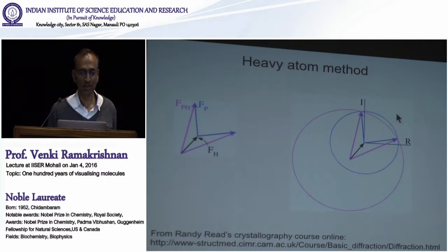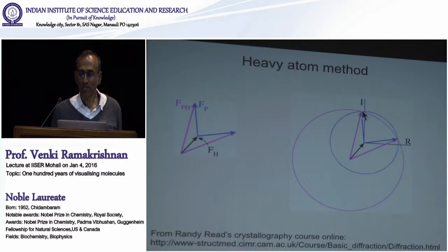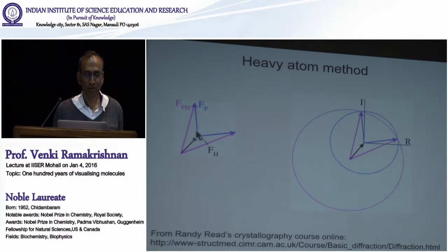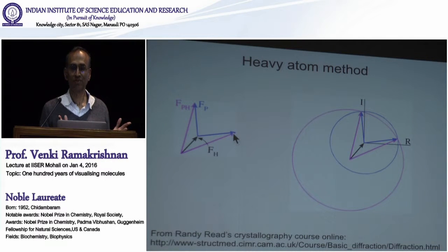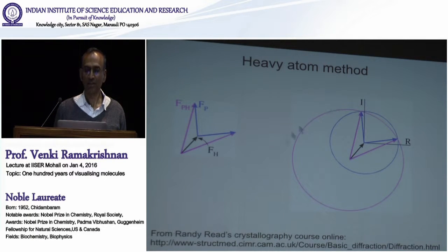You could draw a circle with radius FP — that's this blue circle. And you could draw a circle from the other end of the heavy atom vector with radius FPH — that's the pink circle. Only where these two circles intersect will this vector relationship be satisfied. So now you know that the phase angle for the protein has to be either this or this. If you do this a third time with another heavy atom bound in a different place, you'd get a third circle that intersects only in one of those two places.